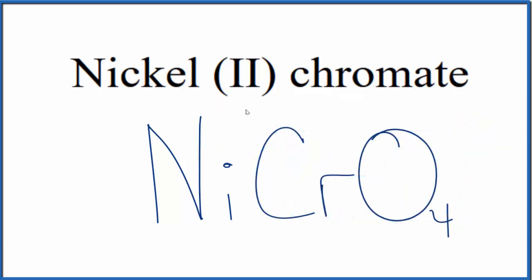So this is the formula for nickel(II) chromate: NiCrO4. And the chromate, that's the CrO4 here.